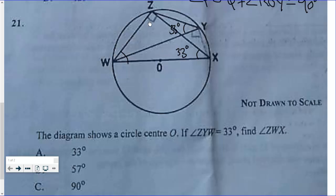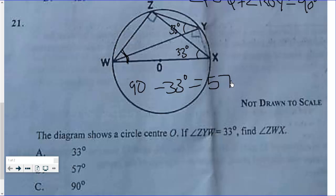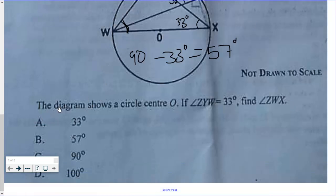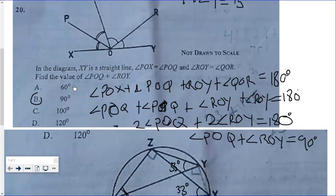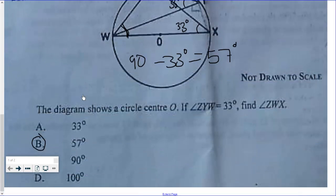This angle is 90 degrees because this is a diameter. Hence this whole angle over here is 90 minus 33 degrees, which gives us 57 degrees. Therefore angle ZWX is equal to 57 degrees, and the answer is B. So it is B throughout — if you chose B throughout, then you've got them all right!